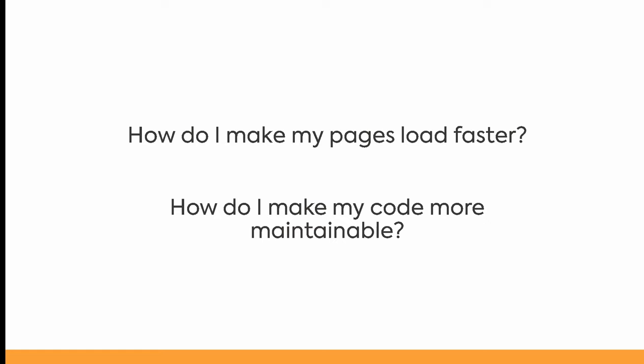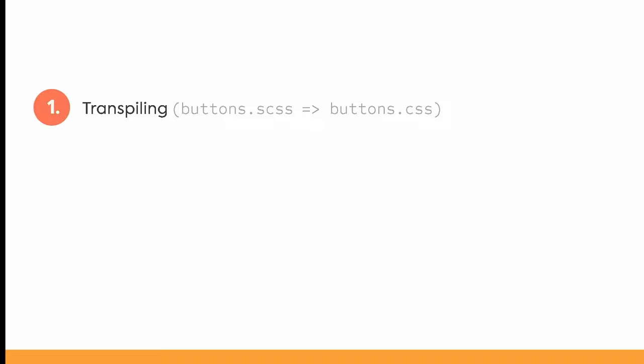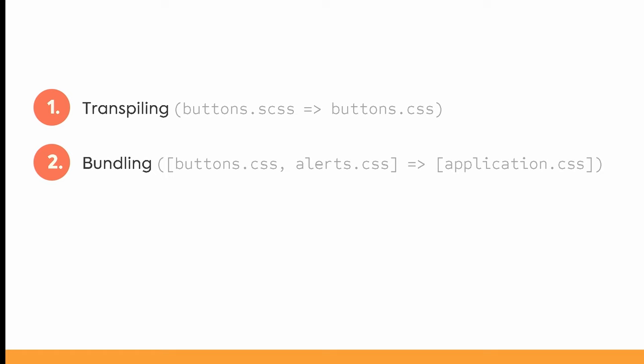And for the original asset pipeline, that meant transpilation, which is converting source code from one language to another, and bundling, which was taking many small files and concatenating them into a large file.